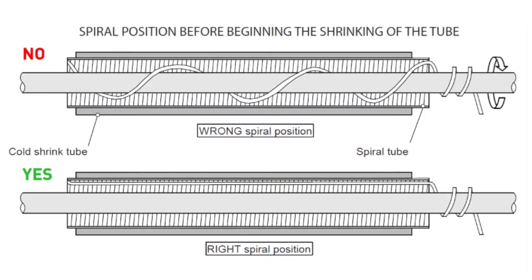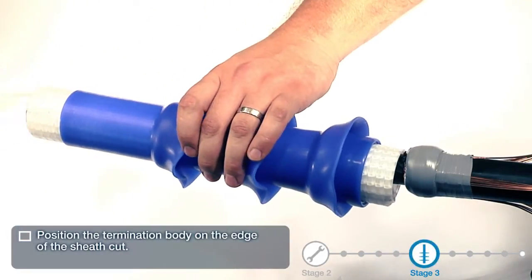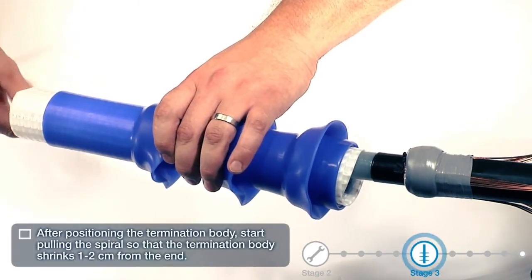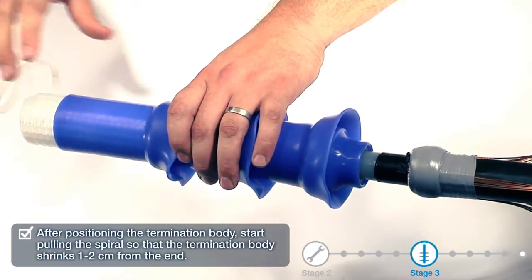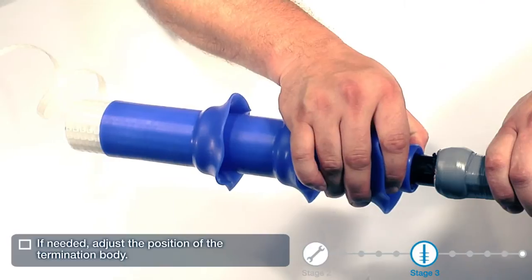Make sure that the spiral is positioned correctly before installing the termination. Position the termination body on the edge of the sheath cut. After positioning the termination body, start pulling the spiral so that the termination body shrinks 1-2cm from the end. If needed, adjust the position of the termination body.